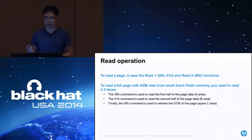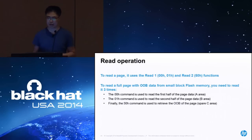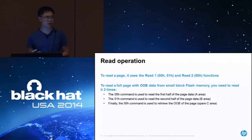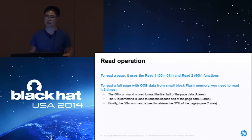For the read operation, you need read one and read two functions. Read one uses command 0x00, which reads the first half page of data, and 0x01 reads the next half page. Read two reads the OOB — out-of-band — data. That out-of-band data is used to record meta information about each page. The reason you need two read operations is because the internal buffer is smaller than a whole page, so you need to split each read.